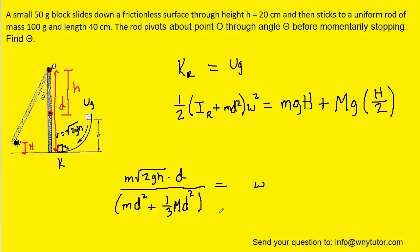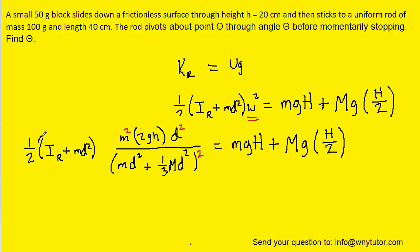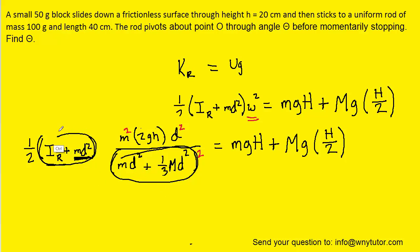We'll go back to our expression for the angular velocity and square both sides, because in our conservation of energy equation we have omega squared. Squaring both sides gives omega squared; the denominator becomes squared, and in the numerator every term gets squared — we end up with m² and d², and the square root cancels away. We then plug this expression for omega squared into our conservation of energy equation. Conveniently, we have the total rotational inertia appearing in both numerator and denominator, so those factors cancel, leaving the power of 1.